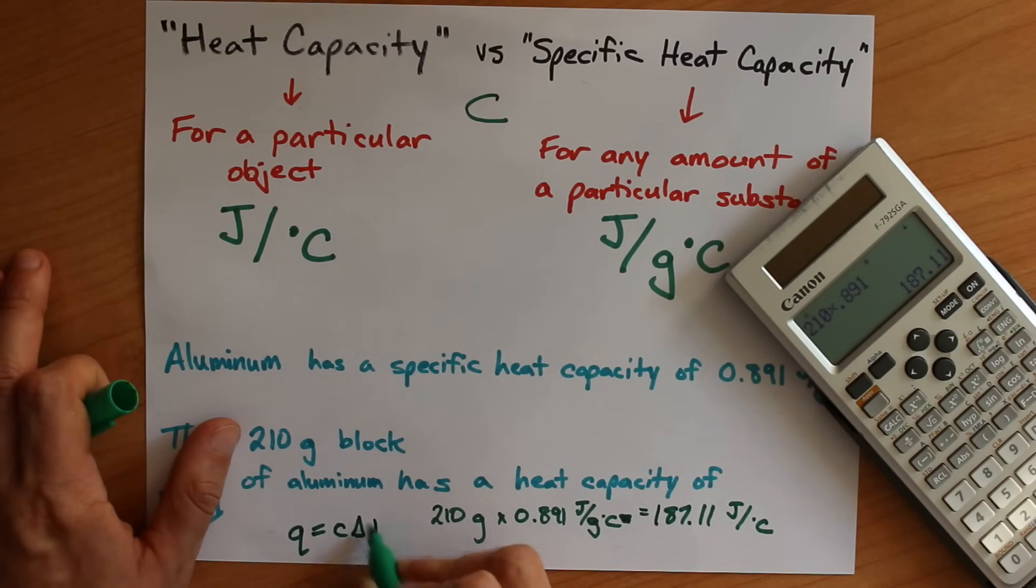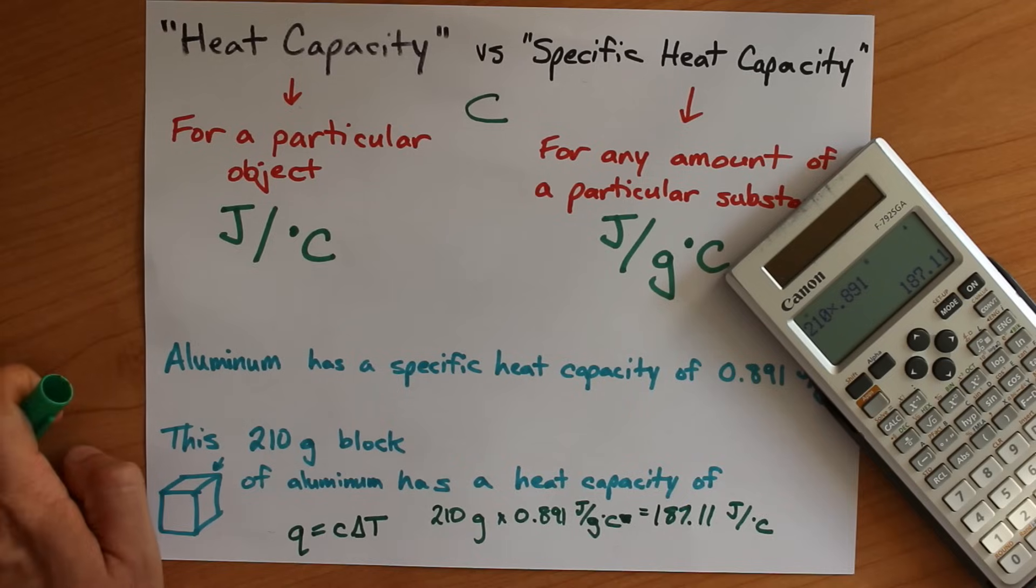It's just Q equals C delta T, because the mass has already been built in to this heat capacity.